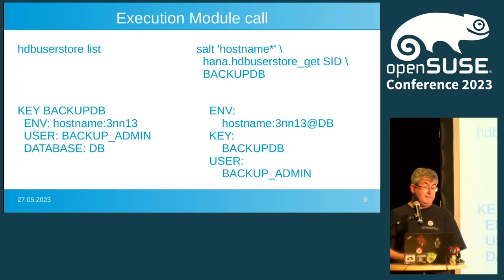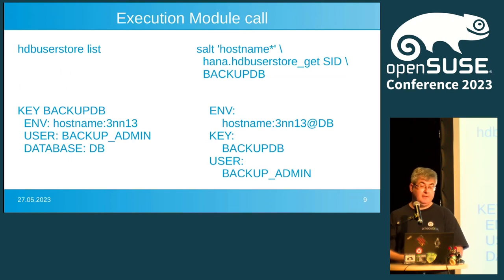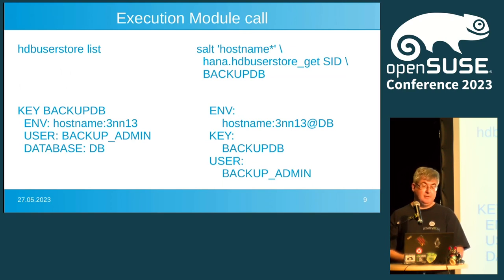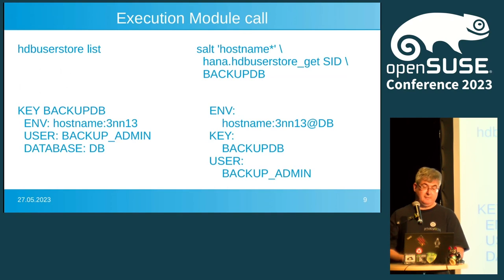On the right-hand side we have the Salt call doing exactly the same thing, and we get back a dictionary with the configuration as it is on the operating system. In the port number I used NN for the system instance number, which is set at installation time — that's something set once when installing the HANA database.